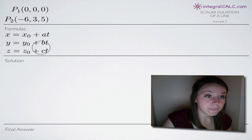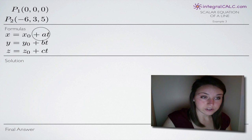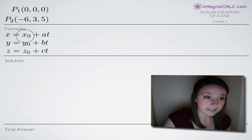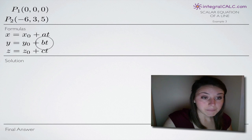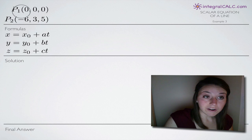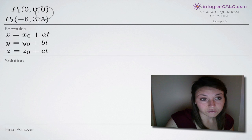And in order to use these formulas, we need a point and a vector. We need the point to find x₀, y₀, and z₀. We need the vector to find a, b, and c. Unfortunately, in our case, we don't have a vector, we only have two points. So what we need to do is use the information given to us in these two points to calculate the vector.